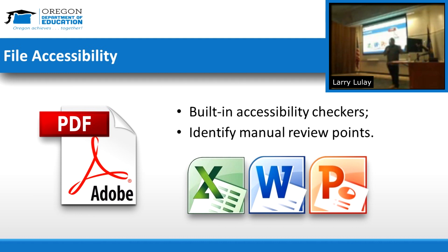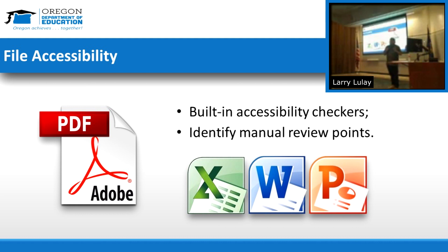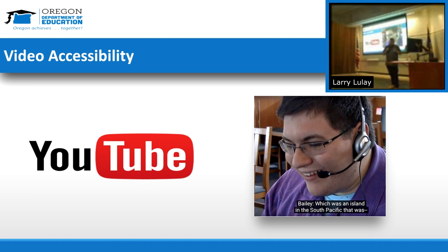When it comes to files, the big thing to remember is that accessibility checkers require you to identify your manual review points. A lot of people run the checker, and as soon as it says they're good, they walk away — not realizing how many points in that checker required human intervention to make a determination. Get those wrong, you fail. It's a really common problem, so remember your manual review points.